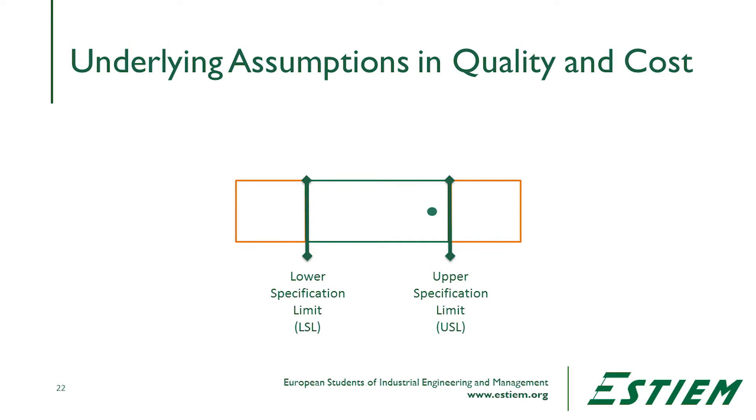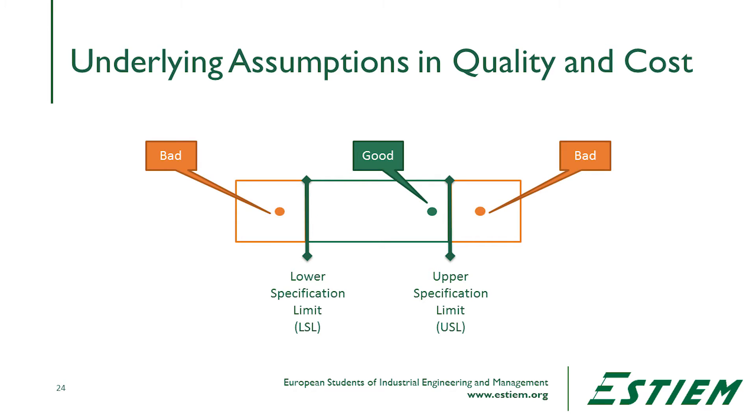It's a very expensive solution to add inspectors, and it's no longer approved. So why are we still using that model to reflect what's actually happening? The reason is we've had some assumptions baked into our whole analysis of quality and cost. One of those assumptions is that as long as it's between the upper and lower limits, it's good — but outside that, immediately, it's bad.